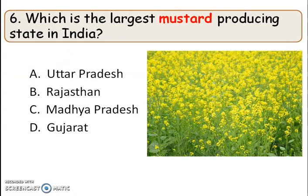Next question: which is the largest mustard producing state in India? The right answer is option B, Rajasthan.